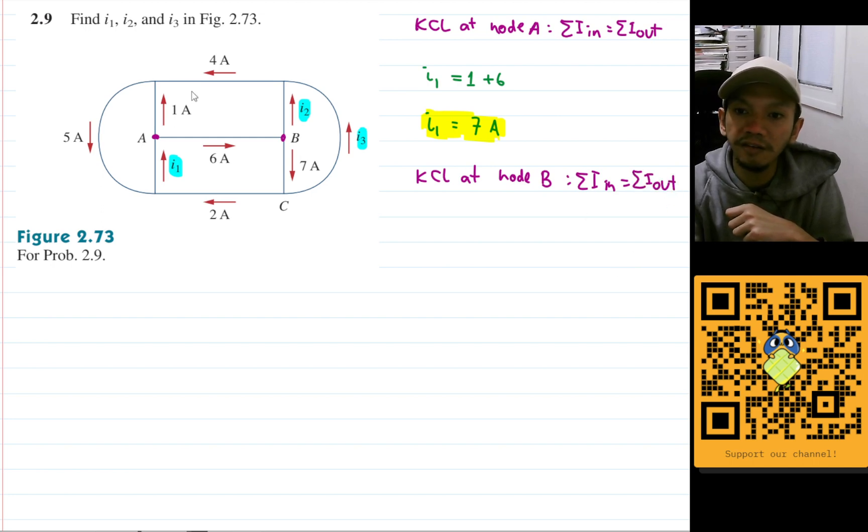The current that goes in is this 6 amperes, so let's just write that: 6. And that is the only current that goes in; the other currents are going out.